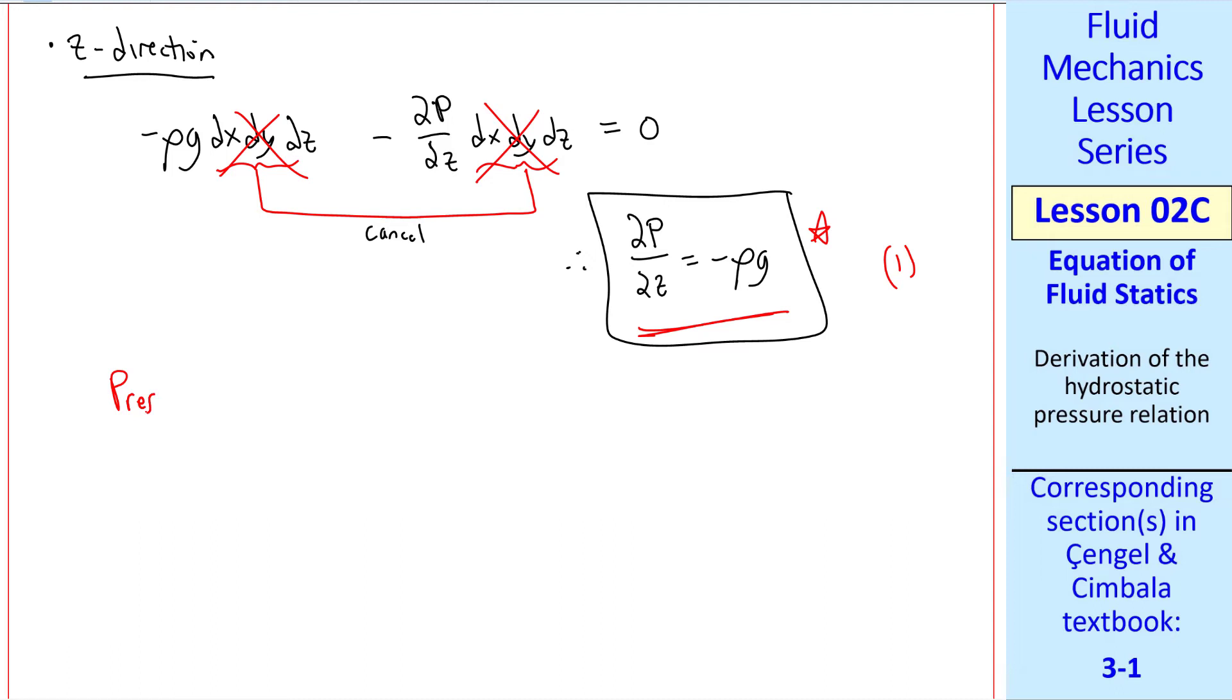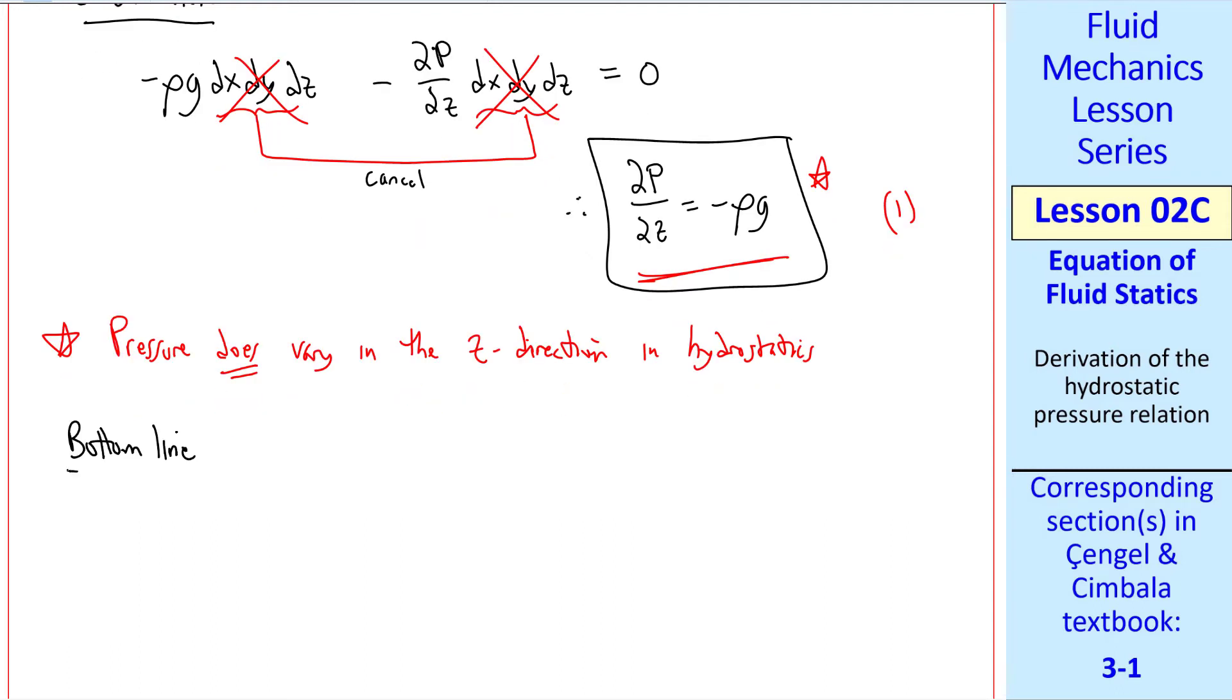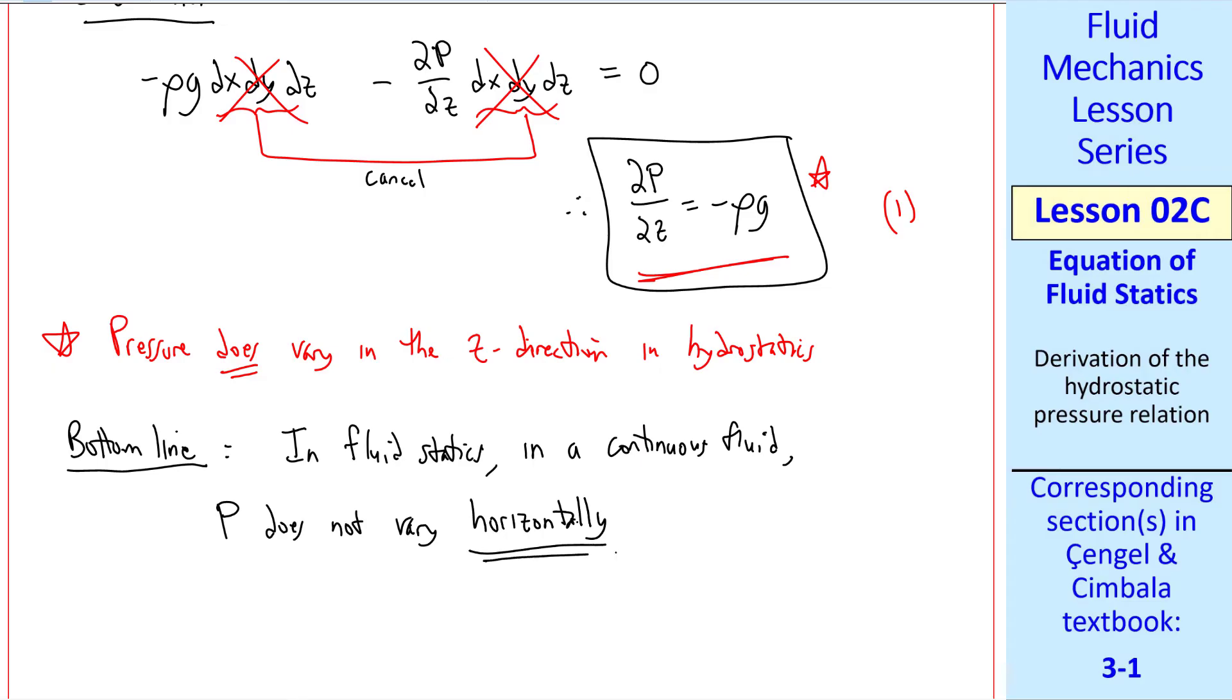Unlike the x and y directions, pressure does vary in the z direction in hydrostatics. The bottom line from this derivation can be stated as follows. In fluid statics, in a continuous fluid. In other words, no gap. We're not talking about two different fluids here. One continuous fluid. p does not vary horizontally, but p does vary vertically. This is an extremely important concept in hydrostatics.